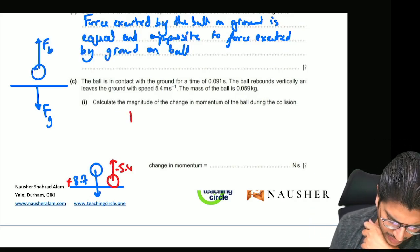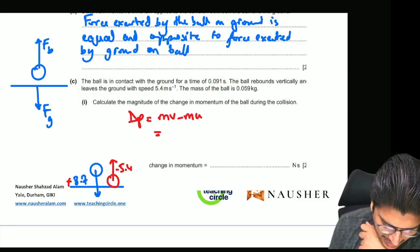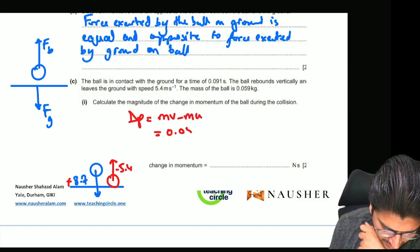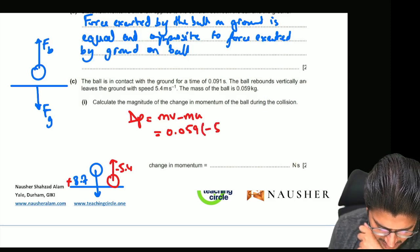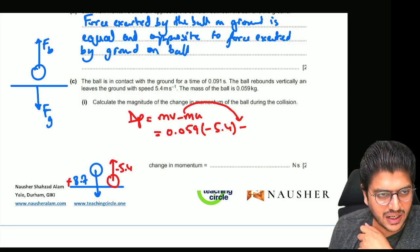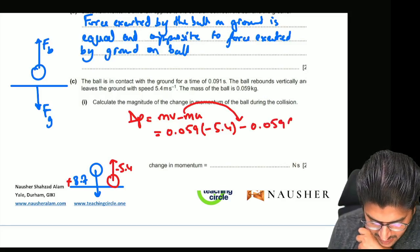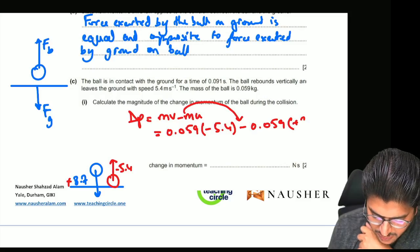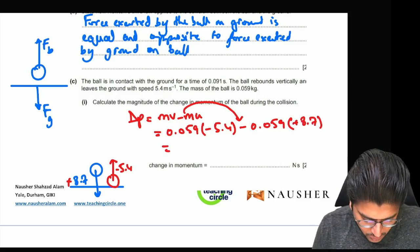The change in momentum will be mv minus mu. Your mass is 0.059 kg, your final velocity is minus 5.4 m/s. Now this is the negative sign of the formula that comes as it is, minus 0.059 times the initial velocity which is plus 8.7 m/s.